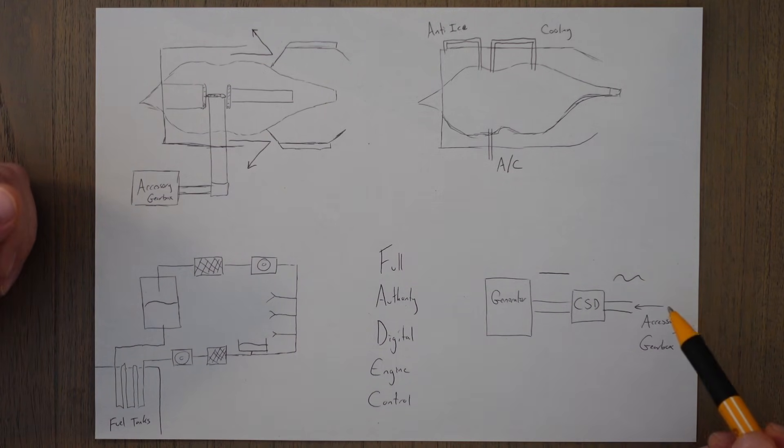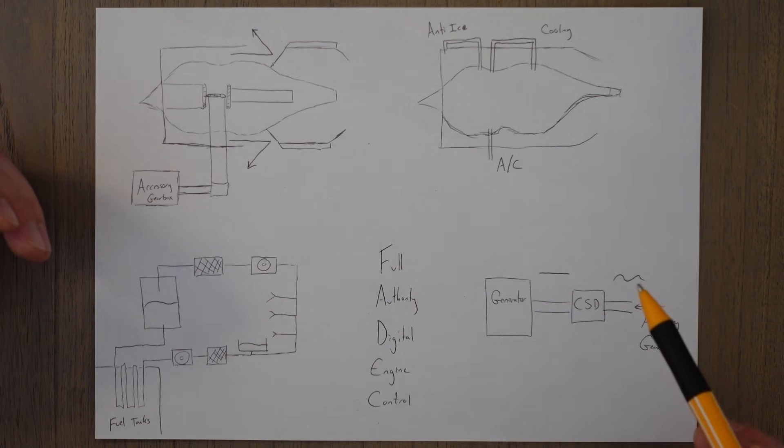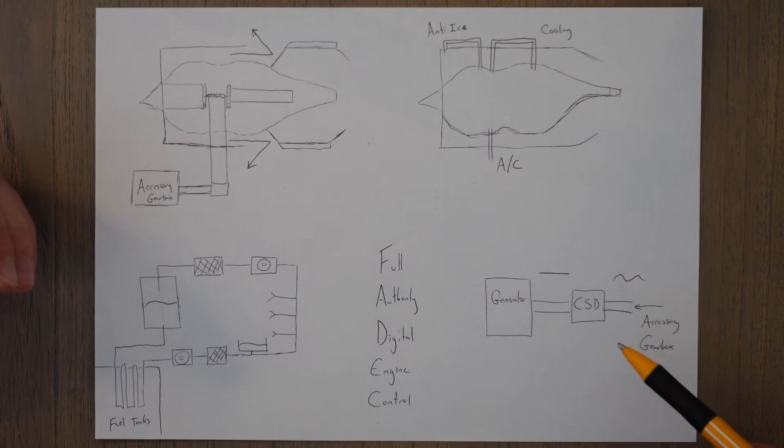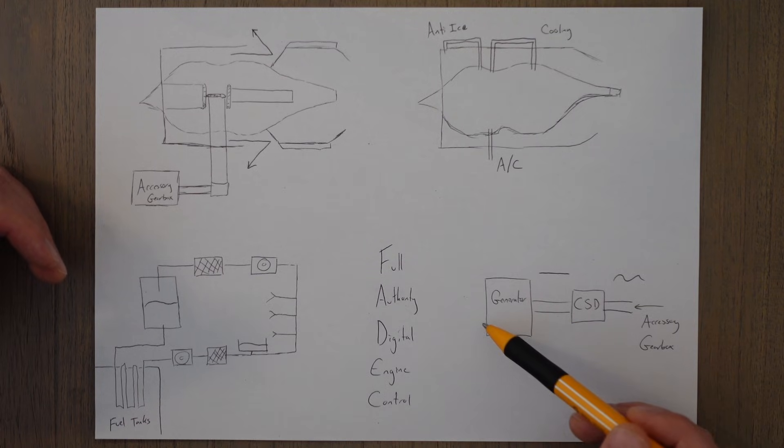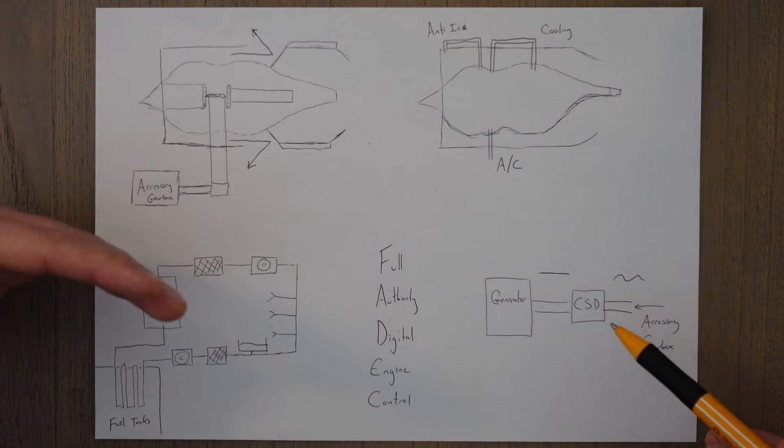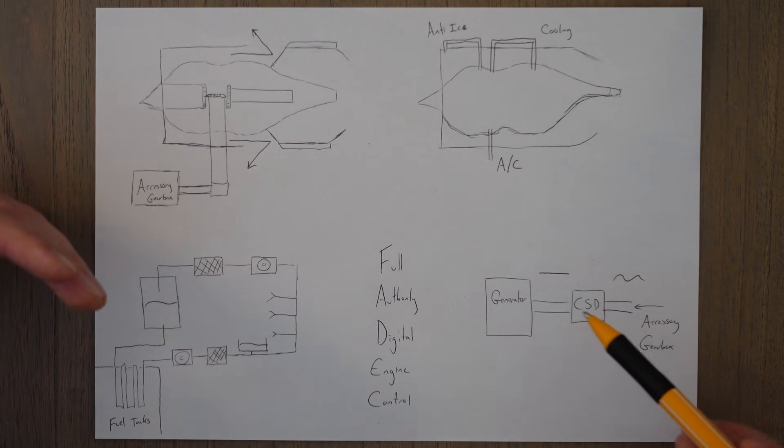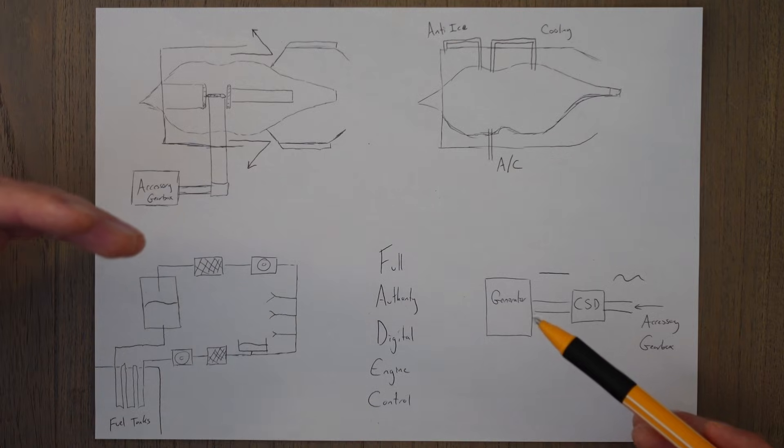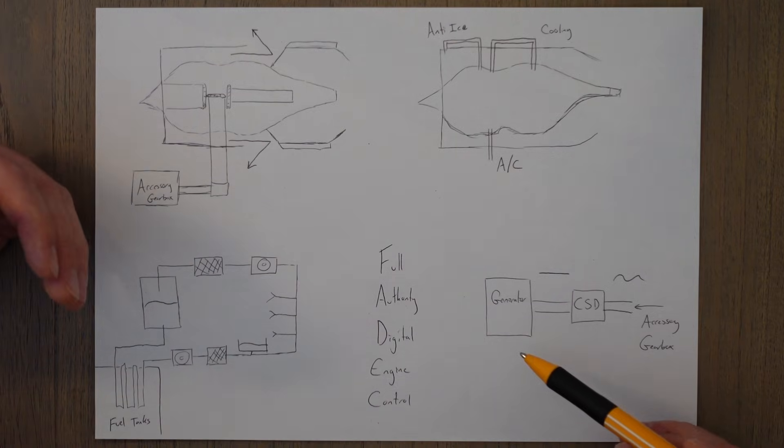Electricity is generated via a constant speed drive and a generator, or combined into an integrated drive generator. The constant speed drive ensures a consistent speed of rotation goes into the generator through a range of engine rotation speeds, and this ensures a constant output frequency from the generator, which is ideal for running all the other aircraft systems off.